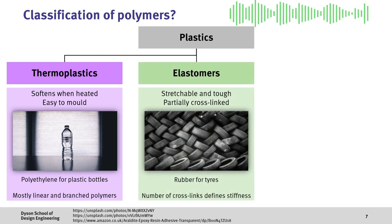Next, we have elastomers, which are stretchable and tough. Here, the polymer chains are partially cross-linked, with the number of cross-links defining the stiffness of the material. One of the most common types of elastomer is rubber for tires.